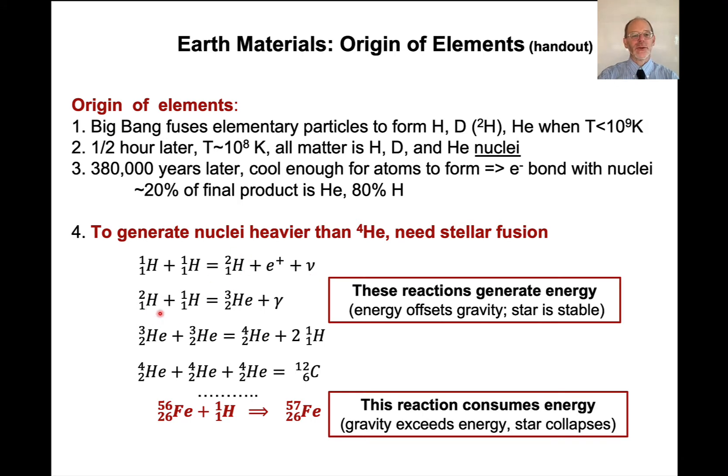A positron has the same mass as an electron, but it has a positive charge. And a neutrino is a little subatomic particle. So that makes more deuterium. Okay, so now if you take deuterium plus hydrogen, you can fuse it to make helium and a gamma, gamma's radiation, it's just energy. And then you can take helium-3 and helium-3 and you can fuse them together to make helium-4 and two hydrogens.